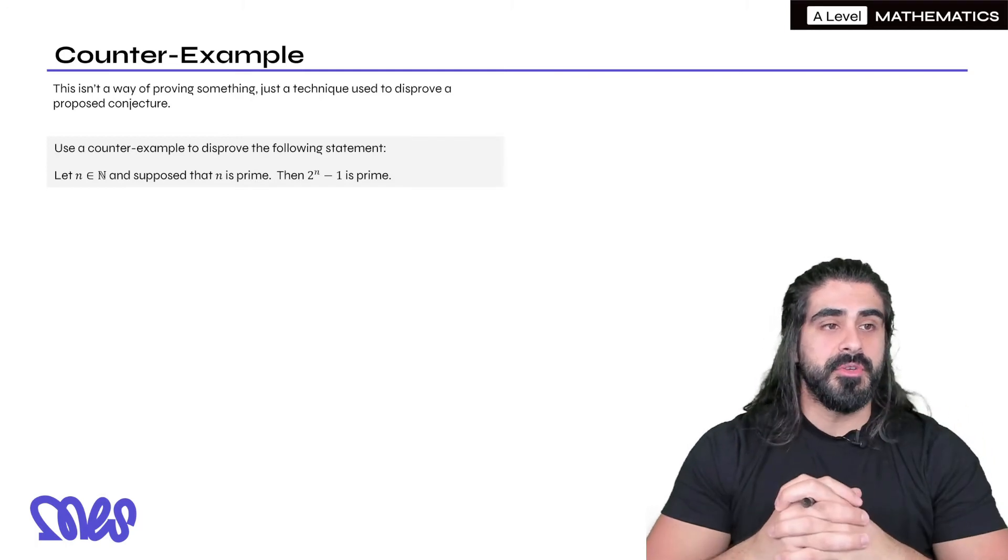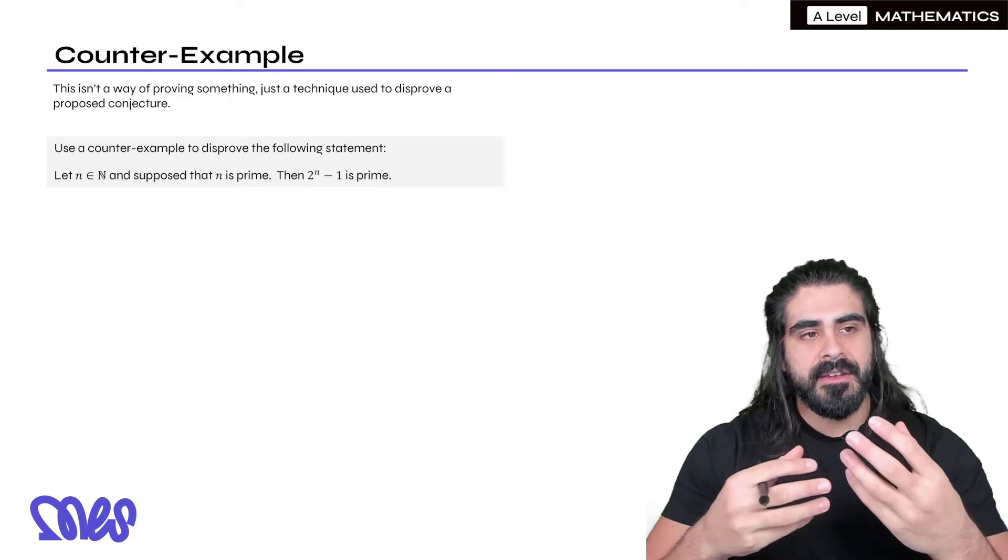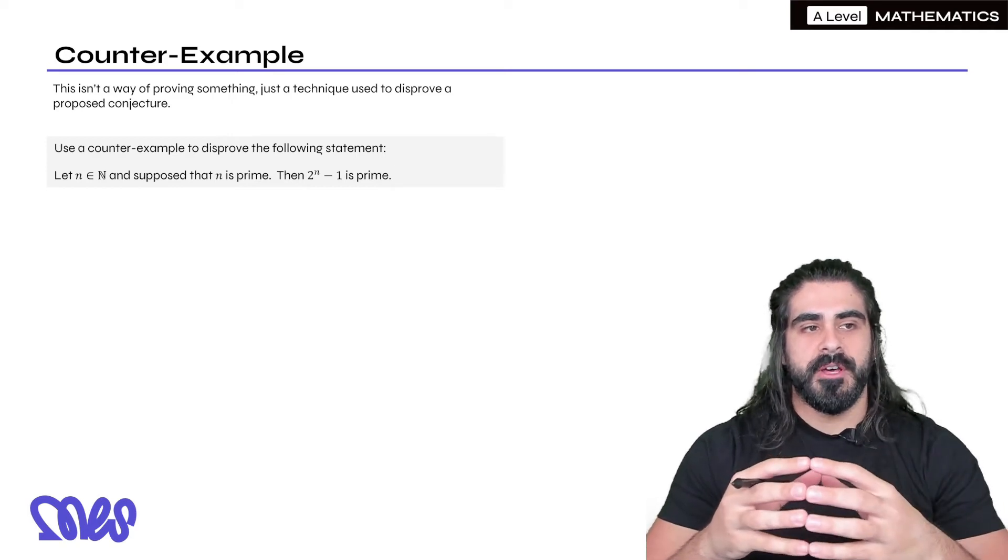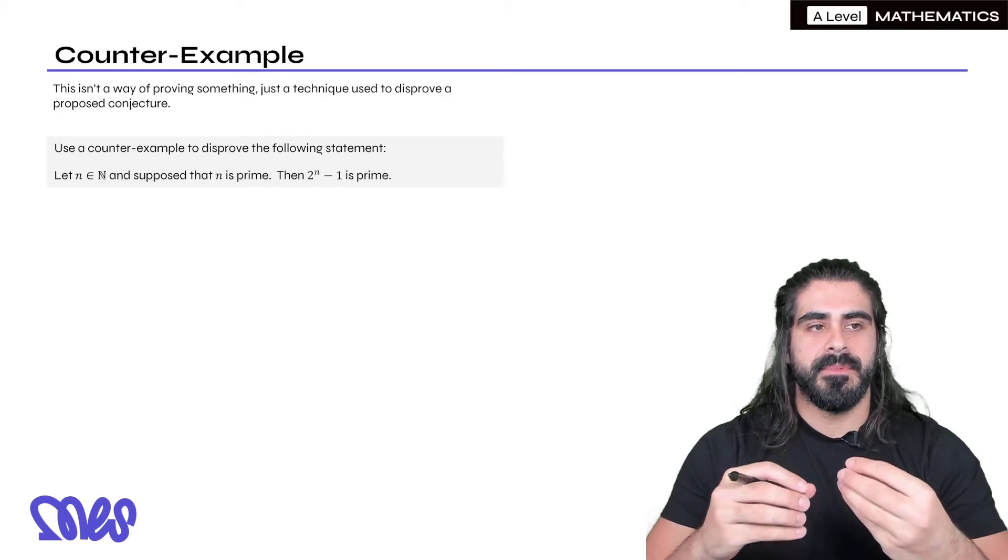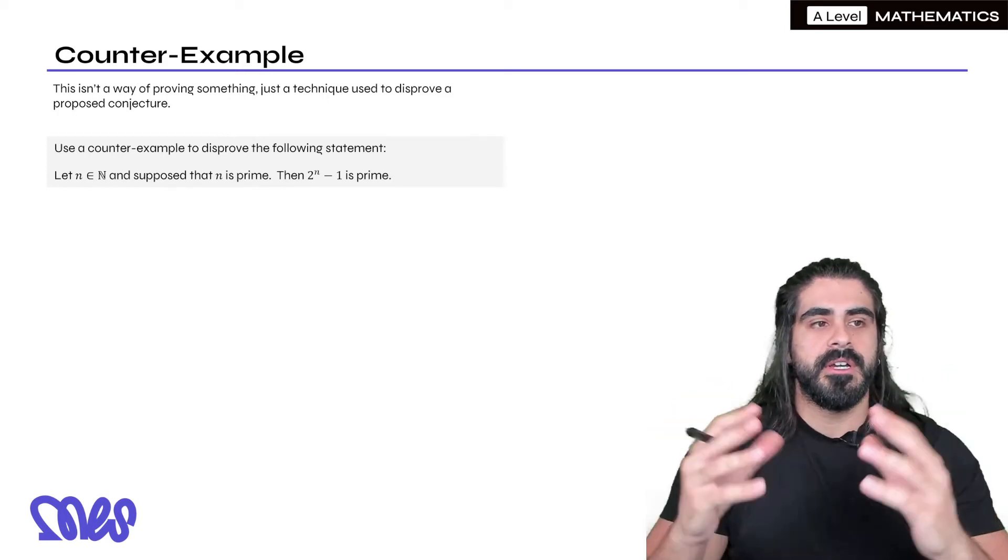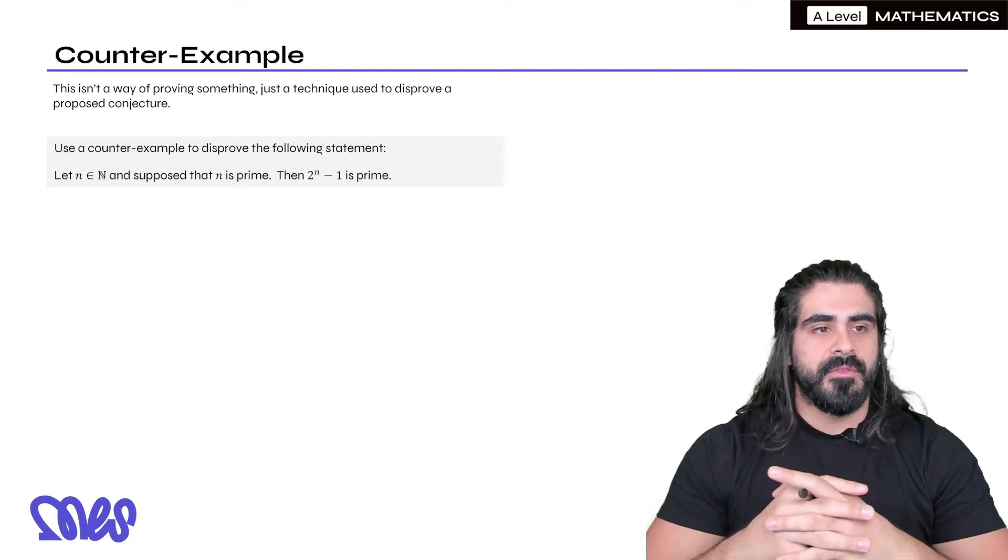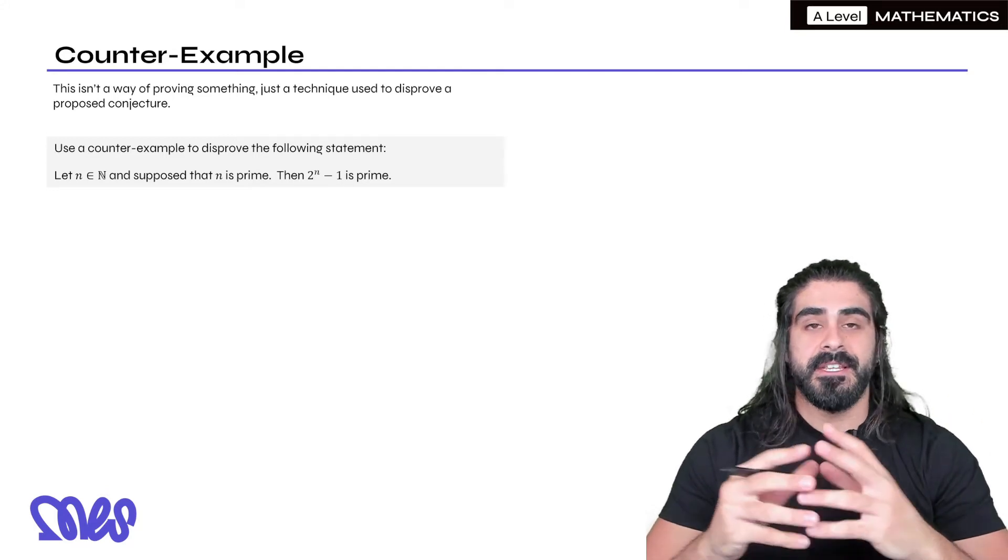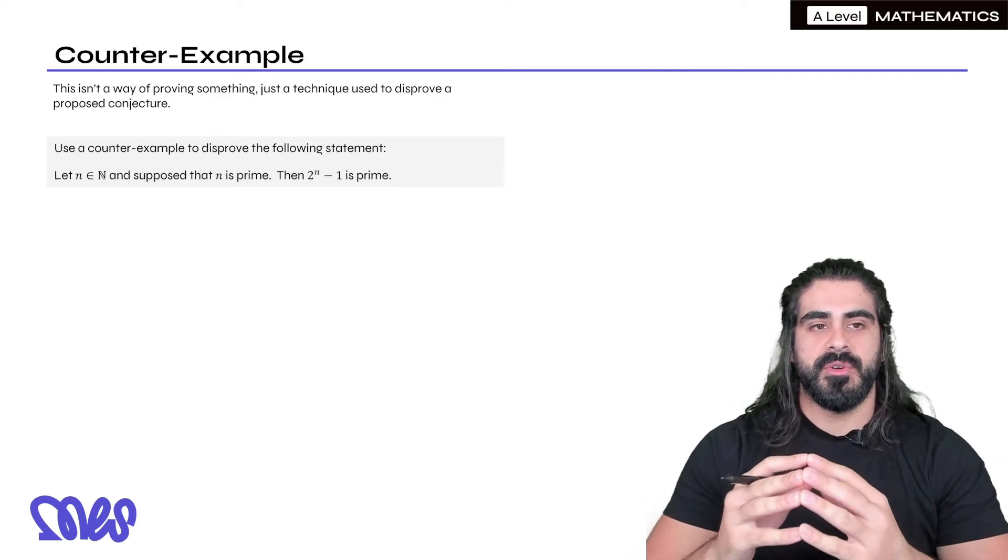So let's just do an example. Use a counter example to disprove the following statement. Let n be an element of the natural numbers. Now remember what are the natural numbers? The natural numbers are the counting numbers, not including zeros. So 1, 2, 3, 4 etc. So let n be an element of the natural numbers and suppose that n is prime then 2 to the power of n minus 1 is also prime.